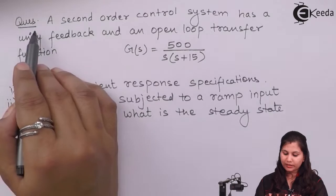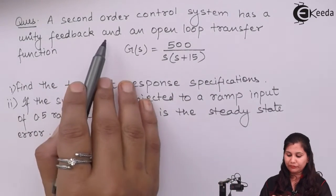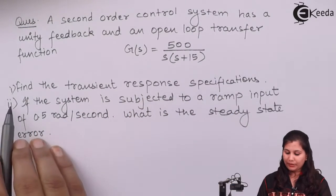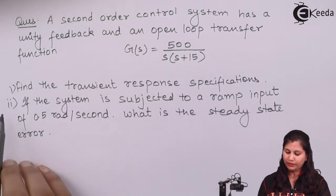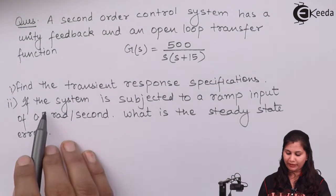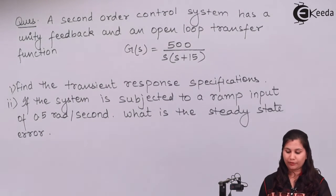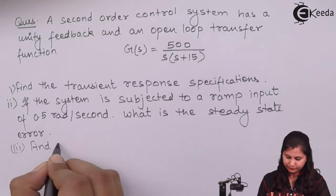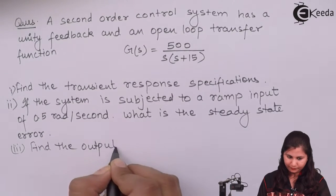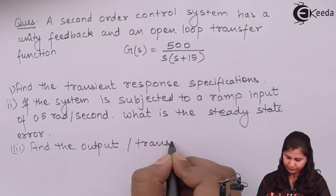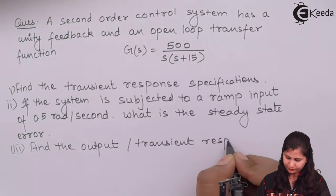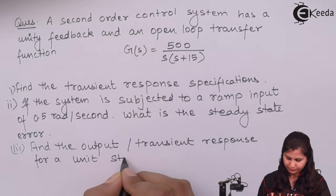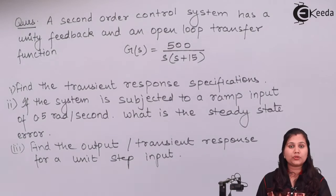Our problem is: we are given a second order control system with unity feedback. We have to find the transient response specifications for this system, and also, if the system is subjected to a ramp input of 0.5 radians per second, what is the steady state error? We also have to find out the time response of the system.